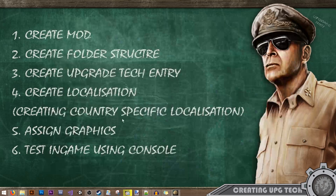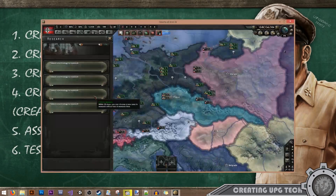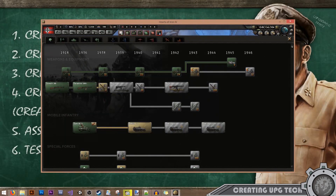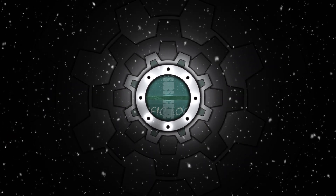That is all, guys — this covers adding upgrades to the tech tree. I'll have a separate lesson about creating unit entries in the tech tree, which is a bit more complicated and why it's not covered here. I'll see you in the next tutorial or lesson on the Iron Workshop. Thank you for watching, bye bye!